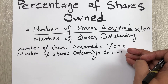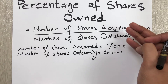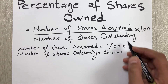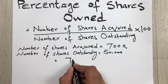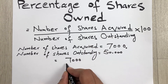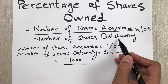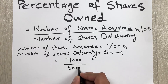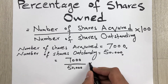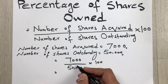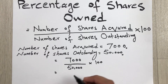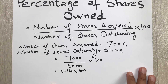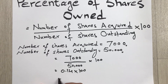Now we simply put these values into the formula. The number of shares acquired is 7,000, divided by the number of shares outstanding which is 50,000, then multiplied by 100. So 7,000 divided by 50,000 gives us 0.14, and 0.14 multiplied by 100 gives us 14 percent.